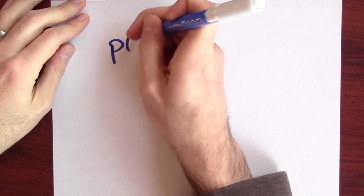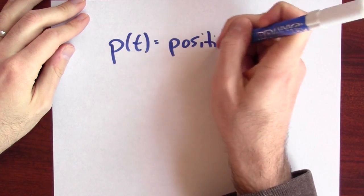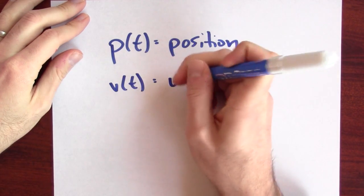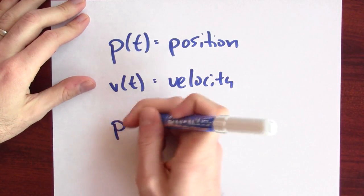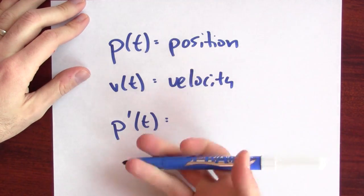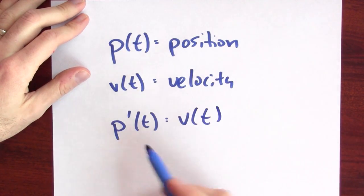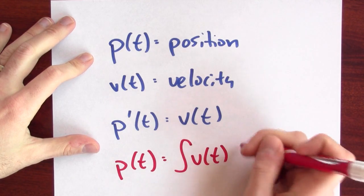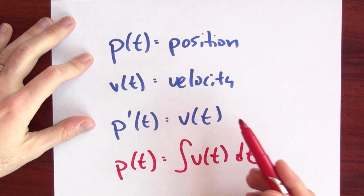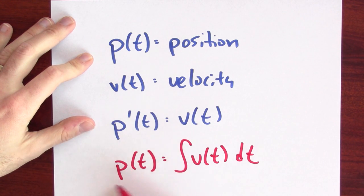The derivative of my position is velocity — let's write that fact down. p of t is my position at time t, and v of t is my velocity at time t. The rate of change of my position is velocity, so the derivative of p is v. I could also write it as an antiderivative statement: p of t is an antiderivative of v of t, because p differentiates to v, so the antiderivative of v is p.